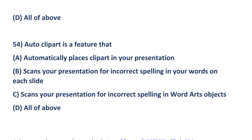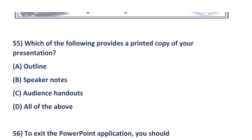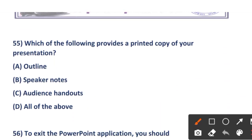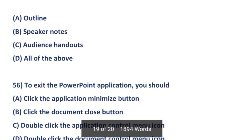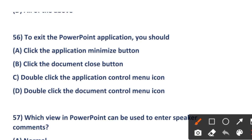The next question: which of the following provides a printed copy of your presentation? Options are: Outline, Speaker Notes, Audience Handout, and All of the above. The right answer is option C — Audience Handout provides a printed copy of your presentation.